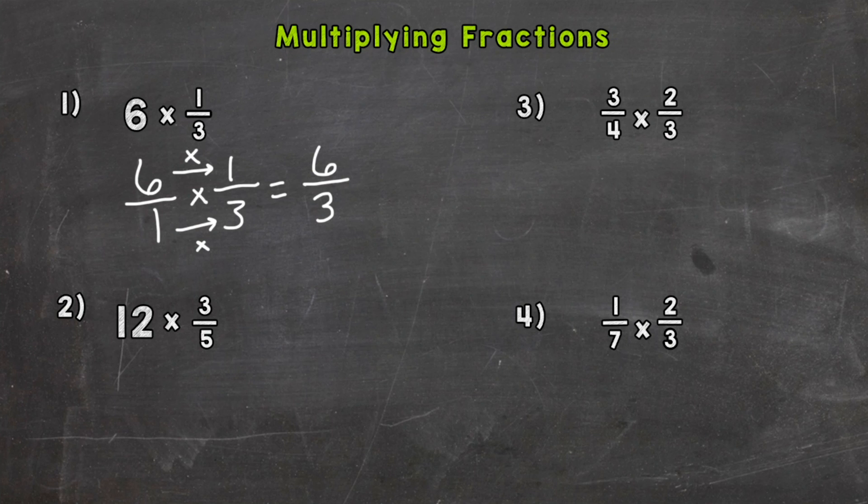So our answer is six-thirds. But that's an improper fraction, meaning the numerator, the top number, is larger than the denominator, the bottom number. So you never leave an answer improper. So how to convert it out of improper fraction? We need to divide the numerator, the top number, by the denominator. So six divided by three.